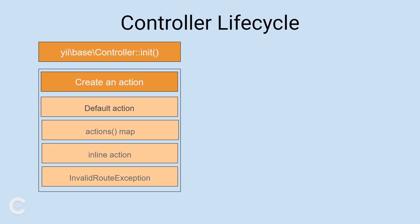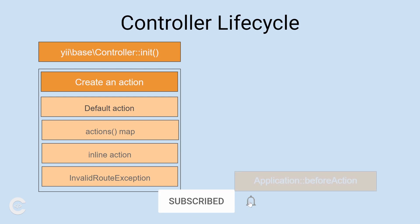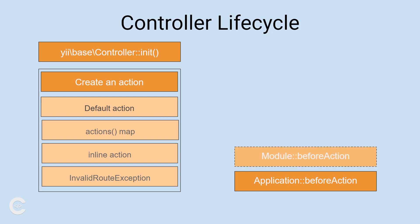If the action was found and the action object is created, then the controller sequentially calls beforeAction on the application, then it calls beforeAction on the module, and then it calls beforeAction on the controller. So if the controller is a child class of another controller, first it will call the beforeAction method on the parent controller. And if any of these beforeAction methods return false, the sequential calls won't be done anymore. So if application beforeAction returns false, module beforeAction and controller beforeAction won't be called.